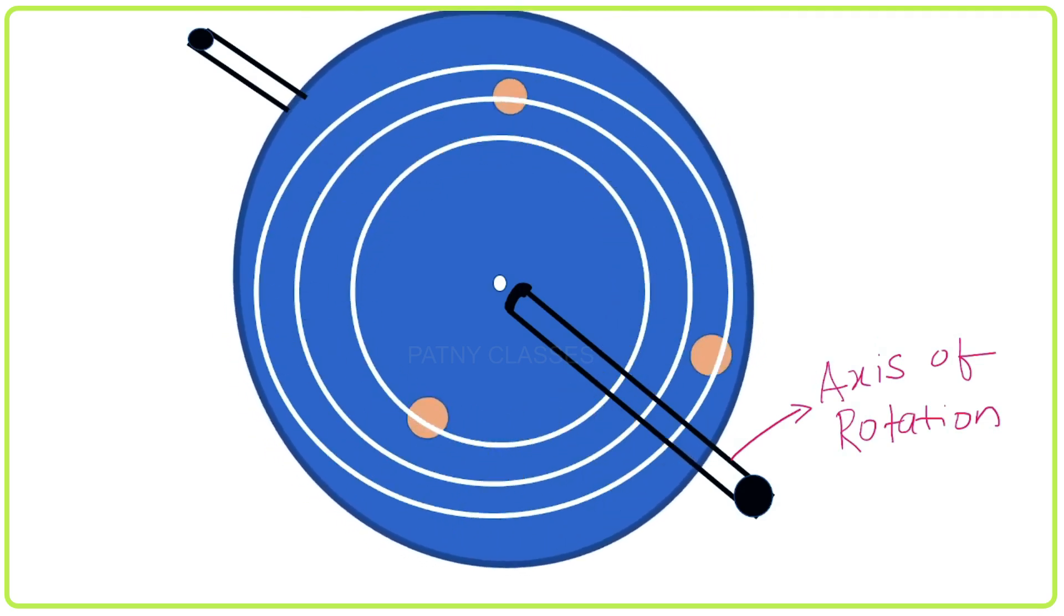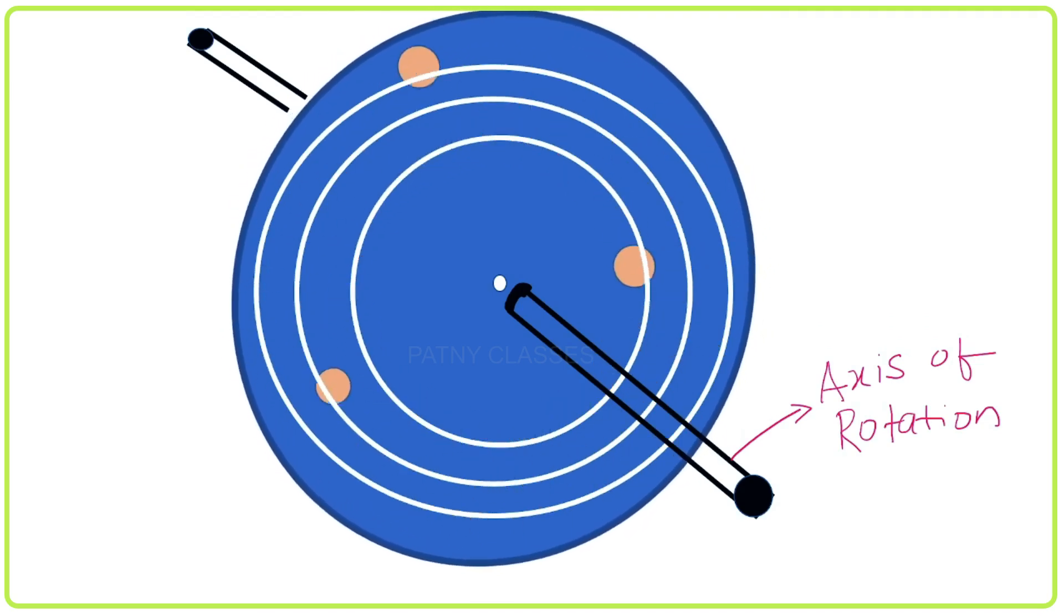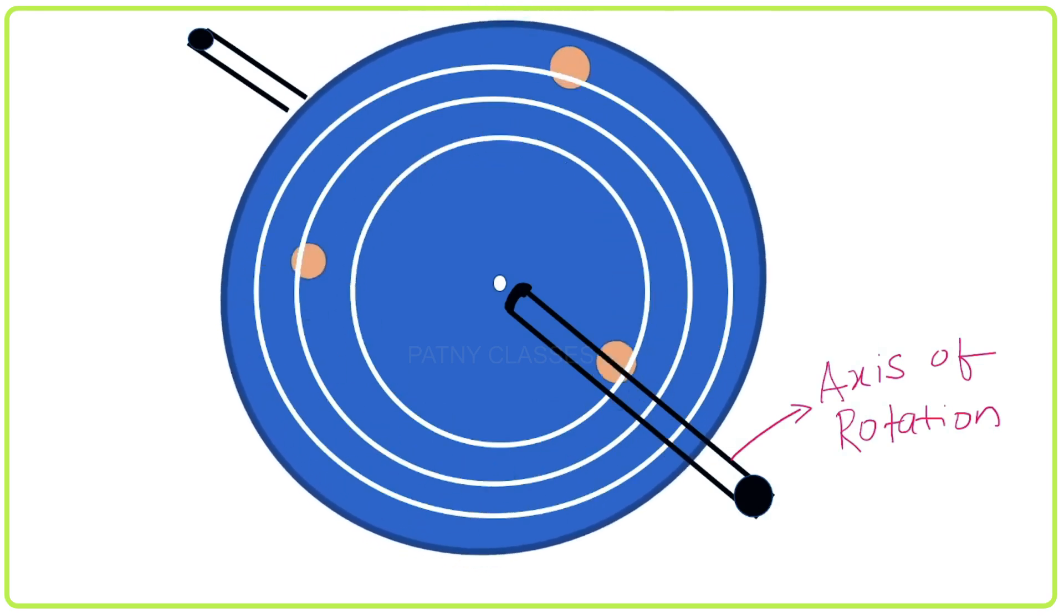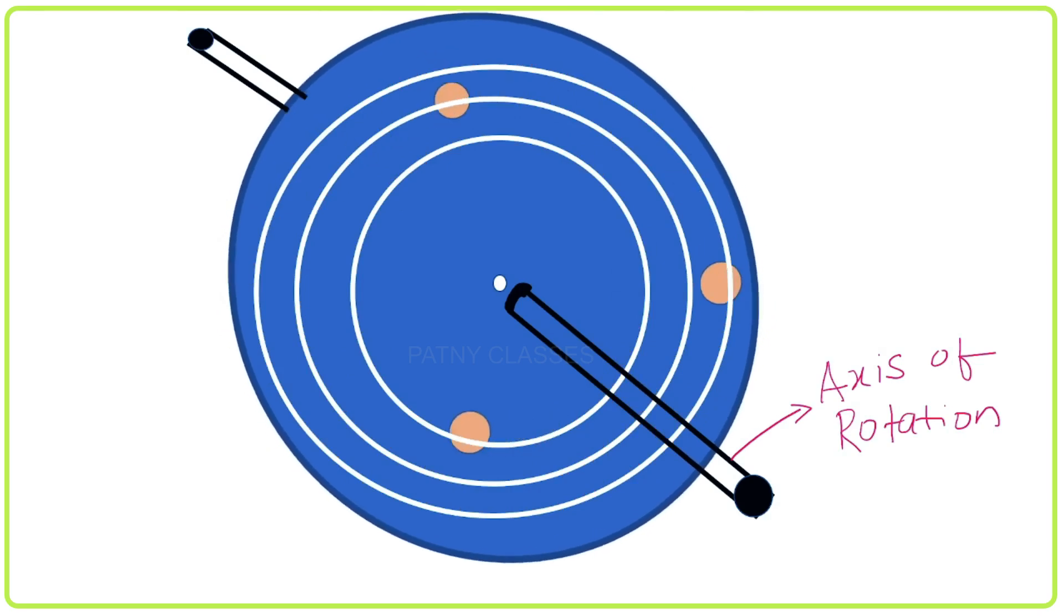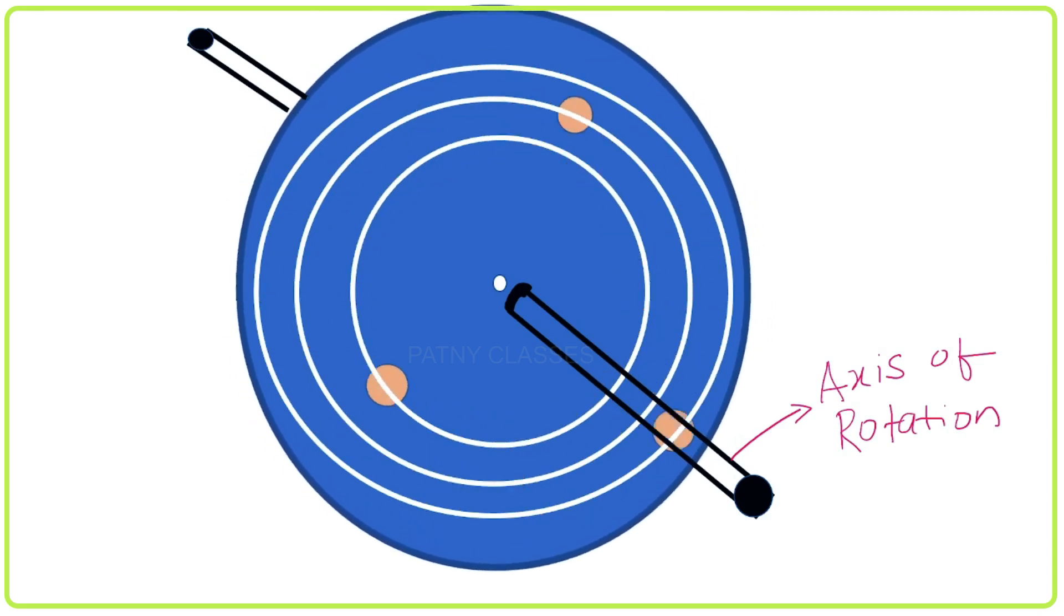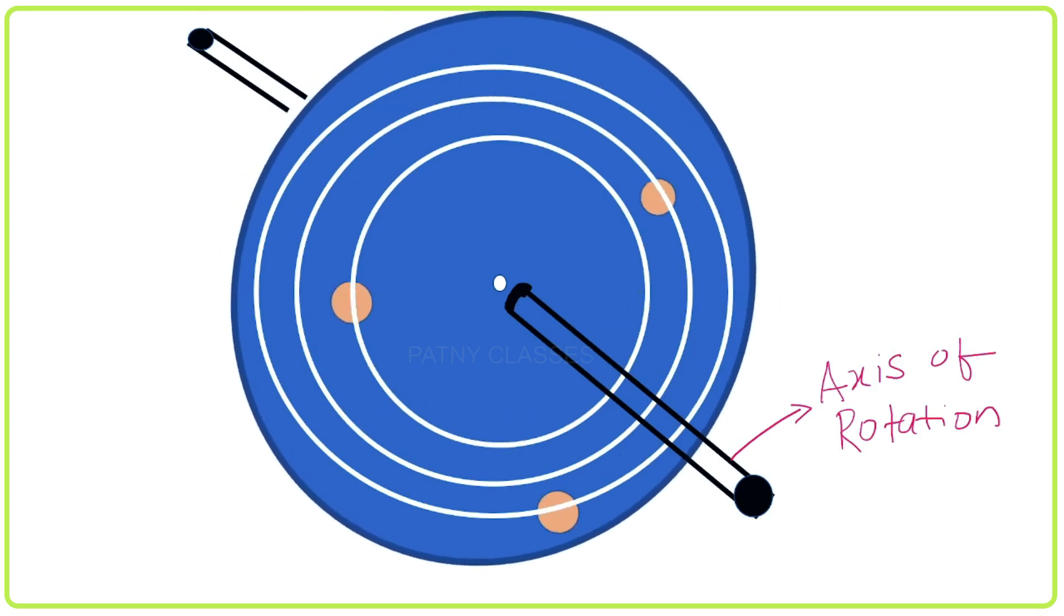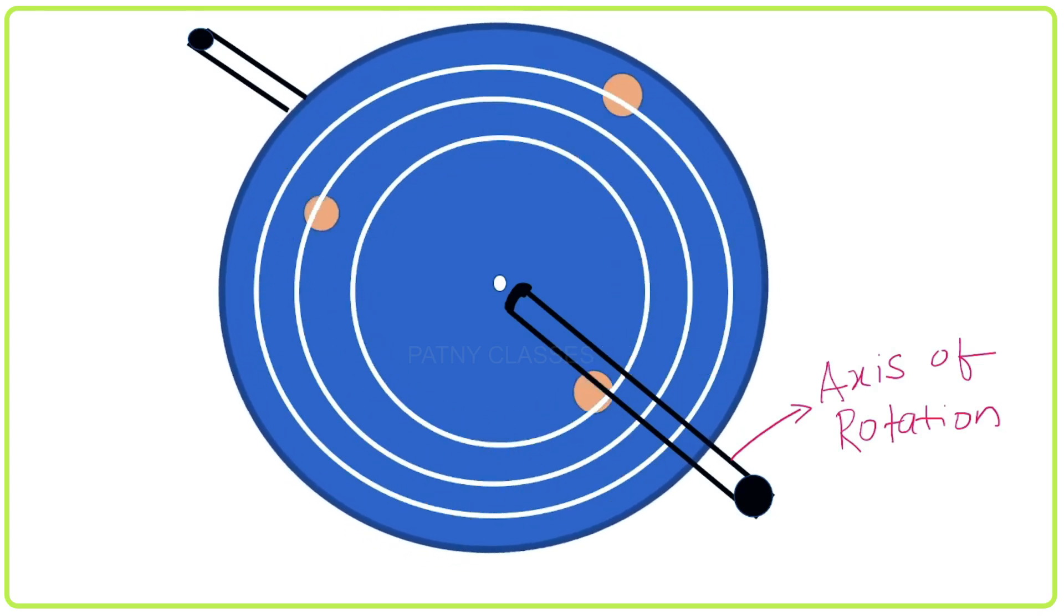Here we observe that as the bicycle wheel or any disc rotates about a given axis, the particles present on the disc or any rotating body perform circular motion.